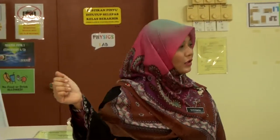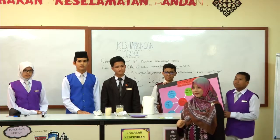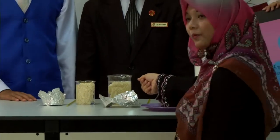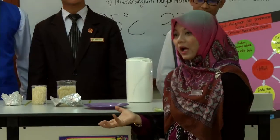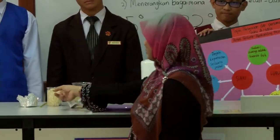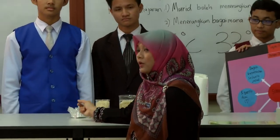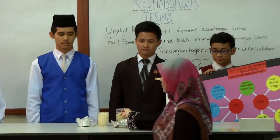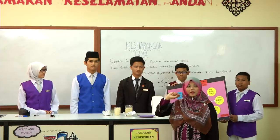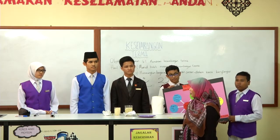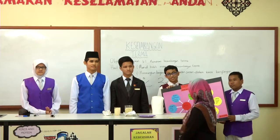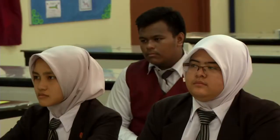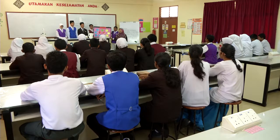Baiklah kelas, faham tak apa yang diterangkan — terutama sekali perbezaan suhu dan haba berkaitan dengan bikar? Bikar besar tadi mengandungi kuantiti molekul yang lebih banyak, jadi tenaga habanya adalah lebih tinggi berbanding bikar yang kecil. Kalau kamu faham, traffic light kamu macam mana? Semua menunjukkan warna hijau. Dengan ini saya menjemput pula kumpulan kedua untuk meneruskan pembentangan.